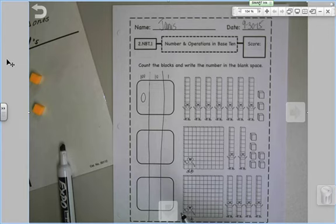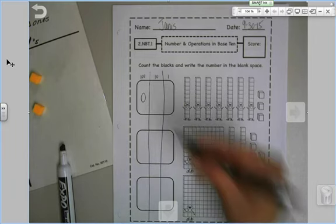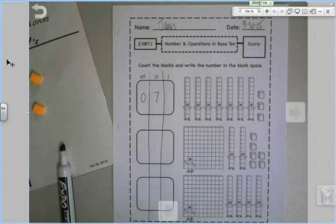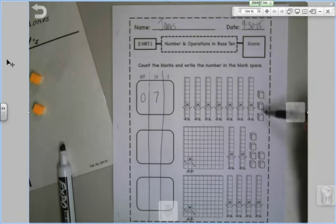After you've written it, I want you to say the number out loud. How many tens rods did you count? Your answer should have been seven. Now I want you to count your ones, write it in your ones box.